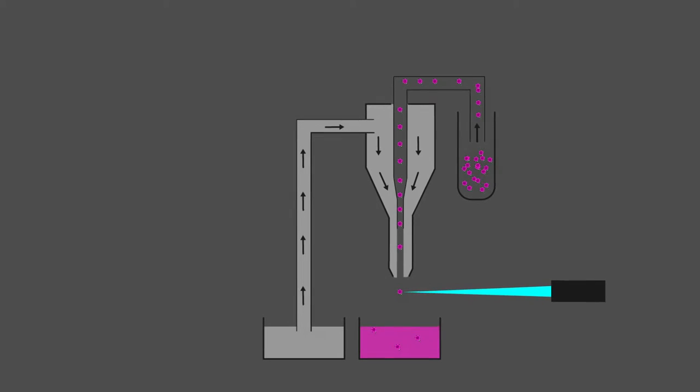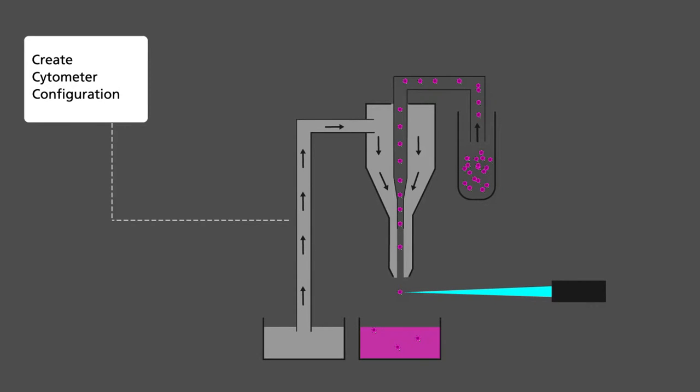The first thing we have to do is to set up the machine in relation to, for example, what type of laser we are using or what sheath pressure we have. This is normally done only once when we buy the machine and when we change part of the hardware and is called baseline setup.